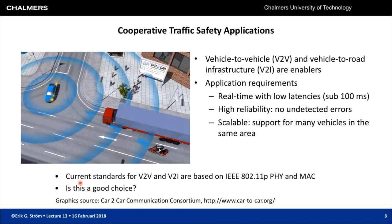Today's standards for V2V and vehicle-to-infrastructure communications are based on a modified Wi-Fi standard called IEEE 802.11p. 802.11 is Wi-Fi, and P is the special amendment with modifications suited for traffic safety application needs. This standard specifies the physical and medium access control layers of the communication system, and the question is whether this is a good choice.